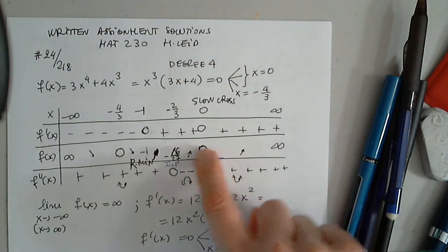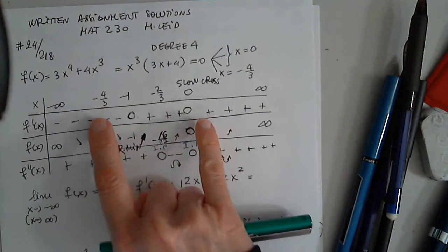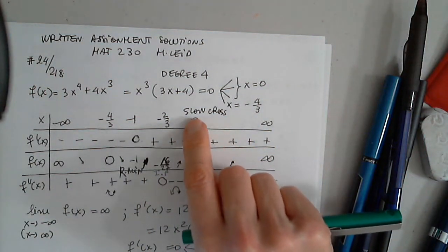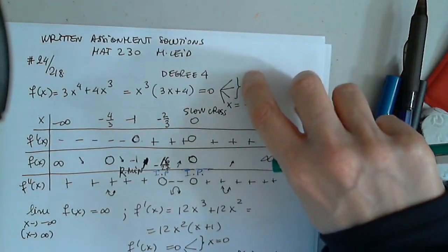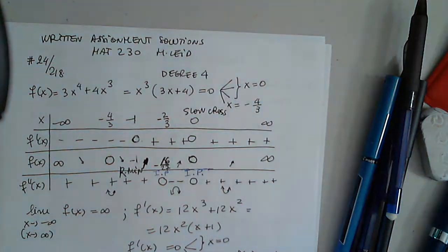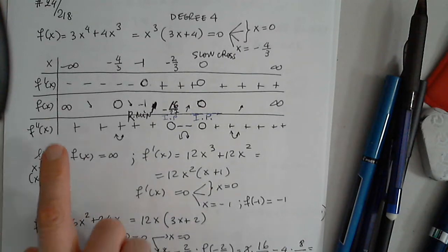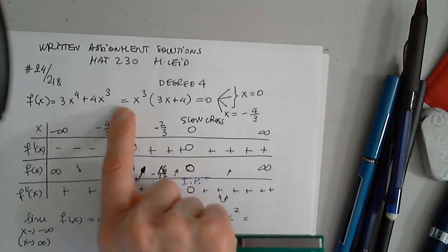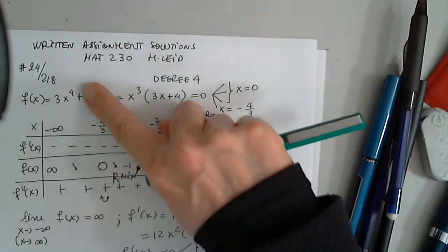So the function is 0, and the function is 0 at these two values. This is a reminder. This is a slow cross because the solution is a triple solution.